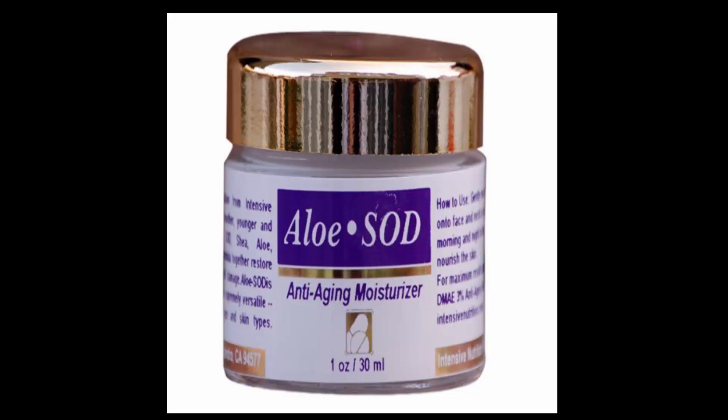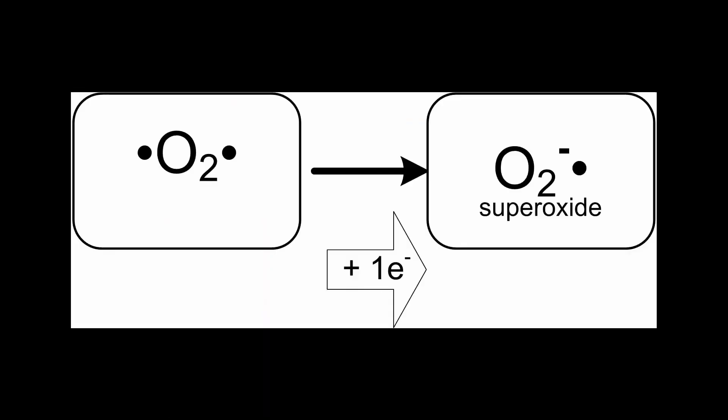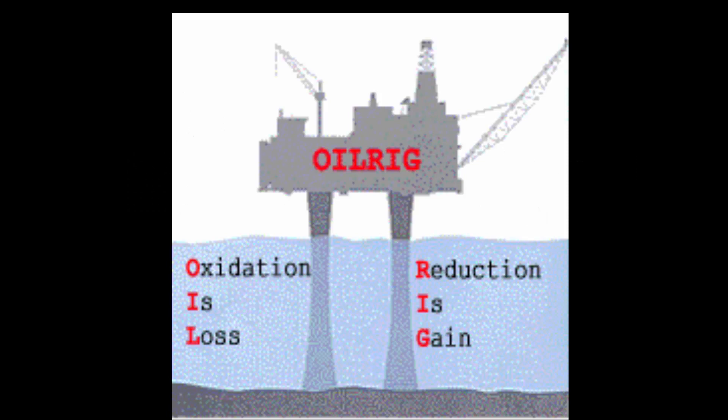Let's look at a superoxide first. Superoxide is made from oxygen, O2, by adding an electron. Adding an electron to O2 is the definition of reduction. I use the mnemonic OIL RIG to keep oxidation and reduction straight. OIL stands for Oxidation is Loss. RIG stands for Reduction is Gain. And what we are talking about here is electrons.